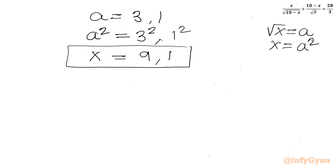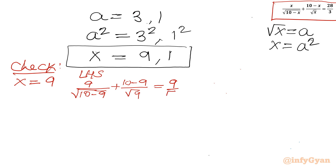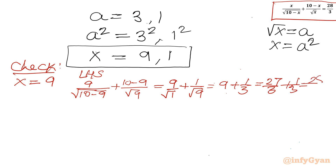Let us verify x = 9: LHS = 9/√(10−9) + (10−9)/√9 = 9/1 + 1/3 = 27/3 + 1/3 = 28/3 = RHS. ✓ x = 9 is verified.